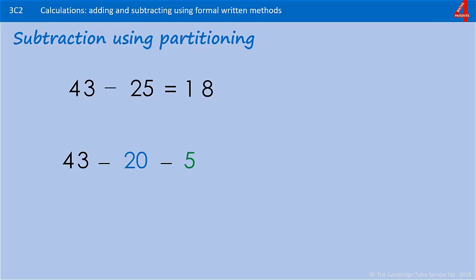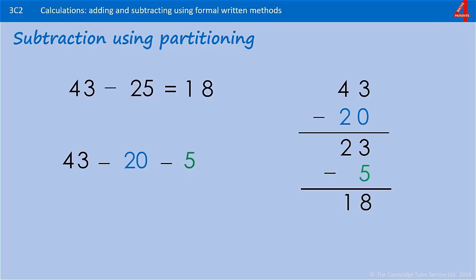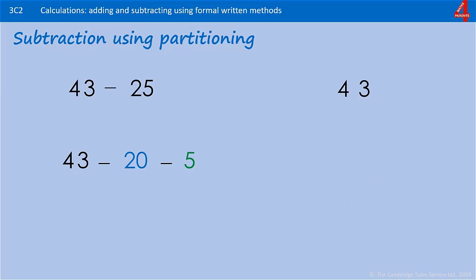This can be written in a column: 43 take away 20, which is 23, then take away 5, which is 18. You could also do it in the other order — starting with 43, you take away the 5 first.